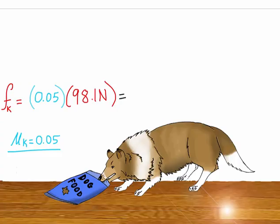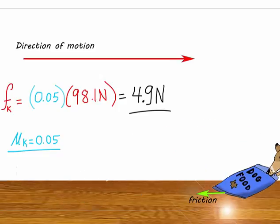Now let's see what happens if the dog pulls the bag across a wax wooden floor. You can see that the kinetic friction is pretty low for this surface.